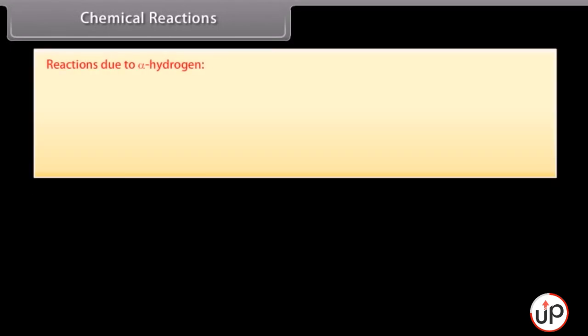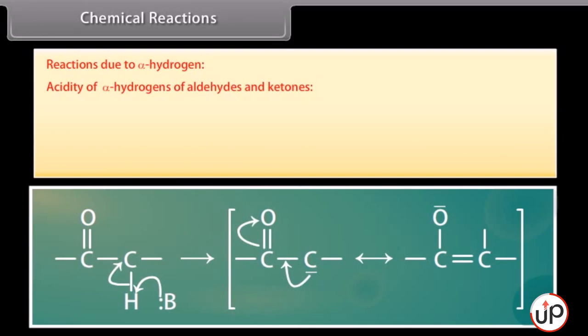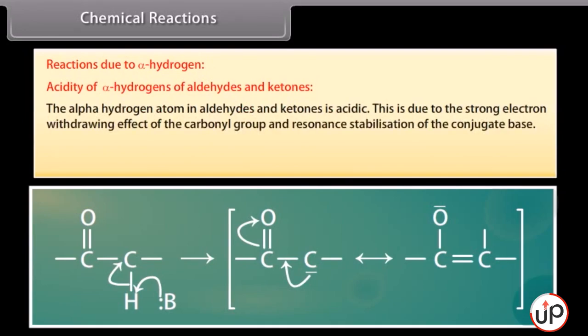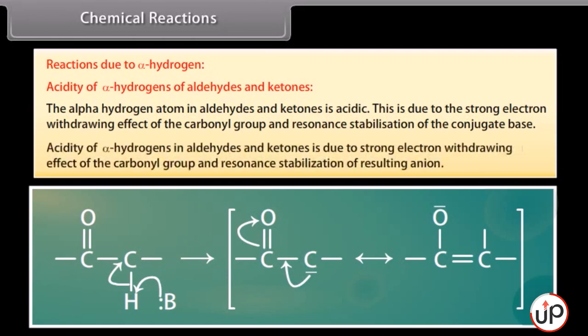Reactions due to alpha-hydrogen: the alpha-hydrogen atom in aldehydes and ketones is acidic. This is due to the strong electron-withdrawing effect of the carbonyl group and resonance stabilization of the conjugate base, resulting in stabilization of the resulting anion.